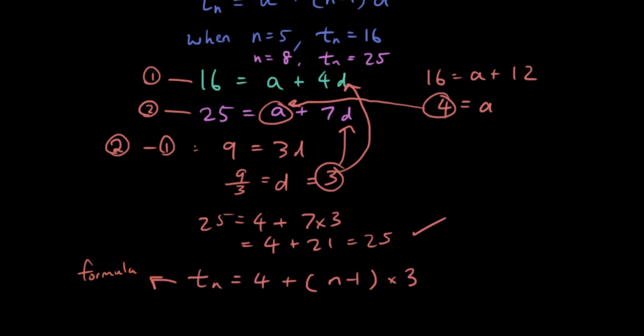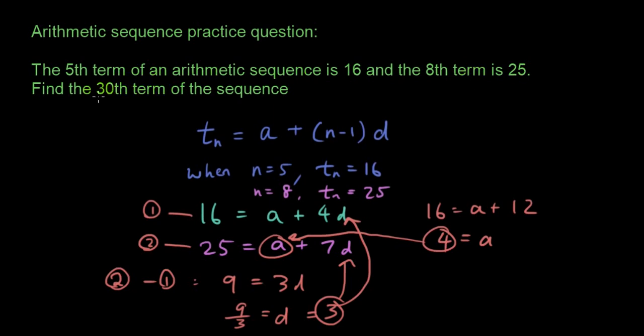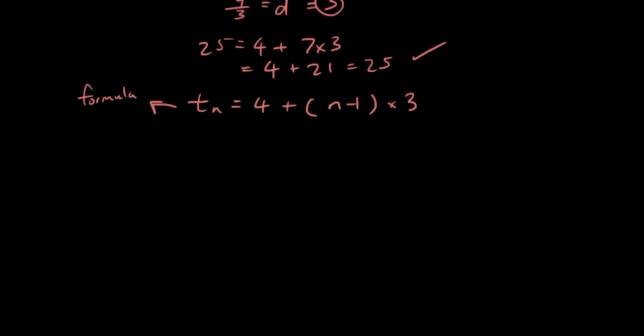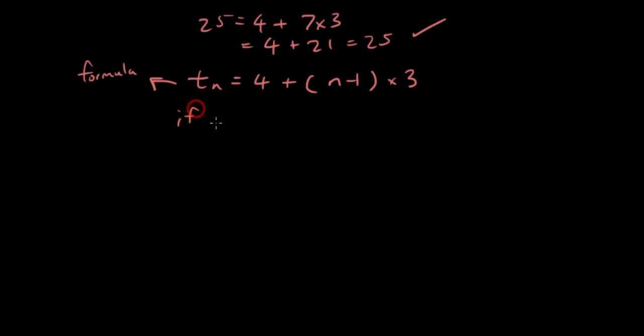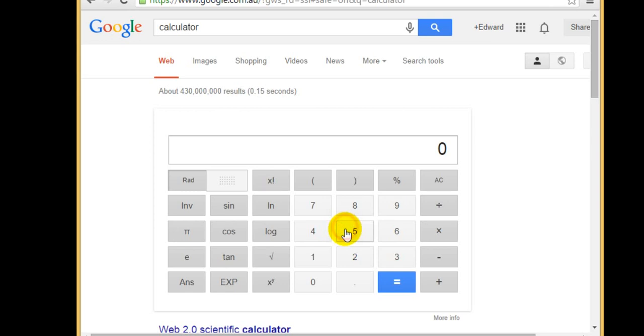So using that formula, we now want to find out what the 30th term is. So if n is equal to 30, tn is equal to 4 plus 29 times 3, which is 4 plus 87, which is 91.